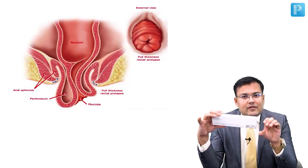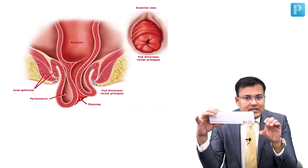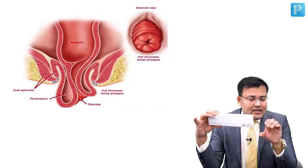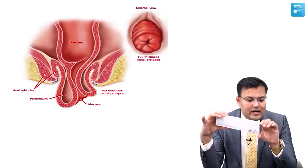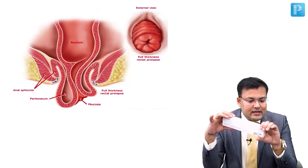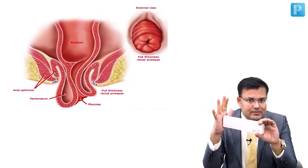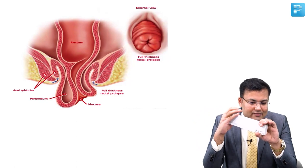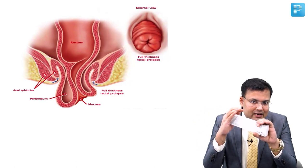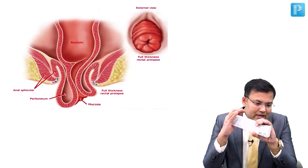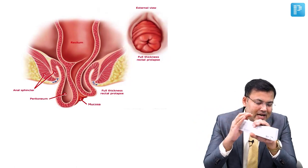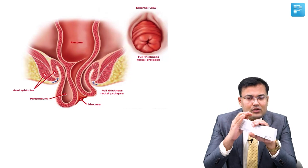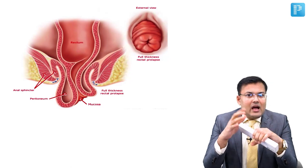This is internal intussusception. Whenever this rectum goes into the anal canal and you can visualize it coming out, this is known as prolapse — rectal prolapse.